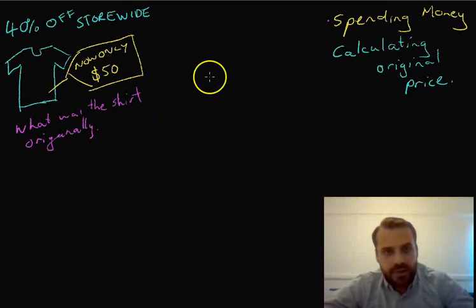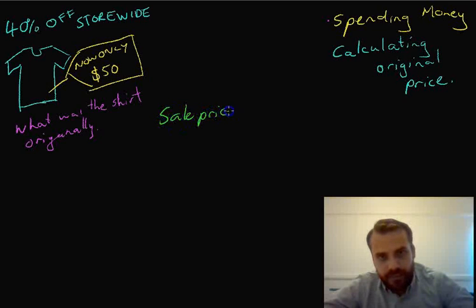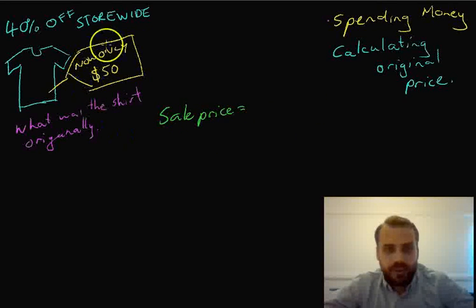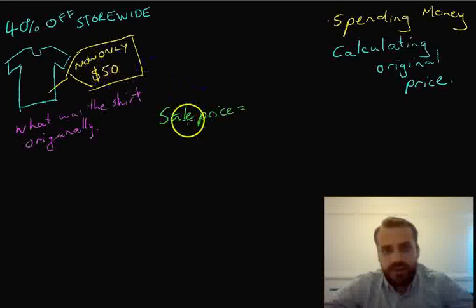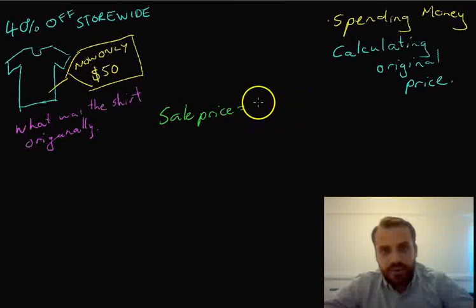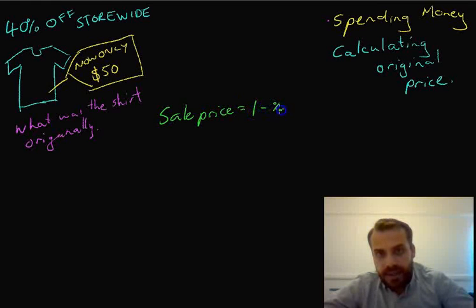The sale price of this item is equal to... I know that looks odd. The sale price of this item... We know the sale price. It's $50. But we're going to use that as our formula to begin with. It's equal to 1 minus the percentage discount. I'll explain why that is in a minute. Times the original price.